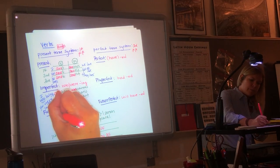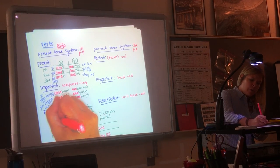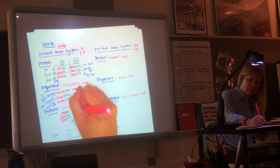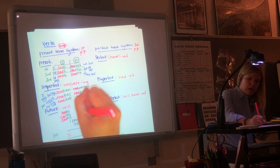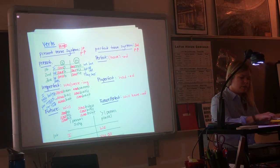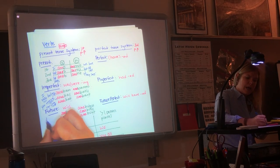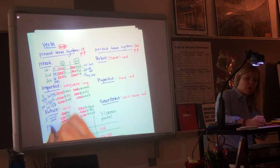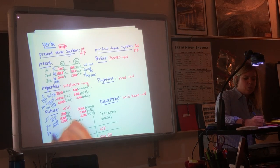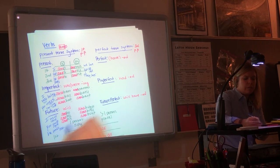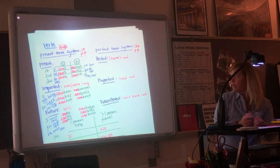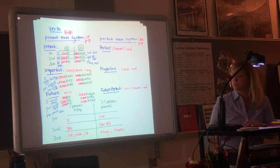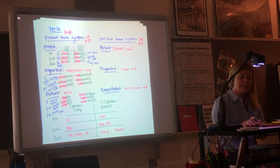And then of course future: amabo, amabis, amabit, amabimus, amabitis, amabunt. I will love. You will love. He will love. We will love. You all will love. They will love. So that's the present tense system.